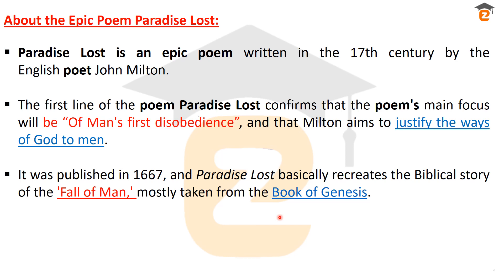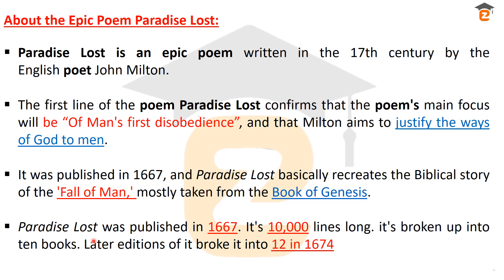The Book of Genesis is the first book of the Bible in the Old Testament. Paradise Lost was published in 1667 and has a total of more than 10,000 lines. It was broken up into 10 books, and in the later edition of 1674 it was expanded into 12 books.